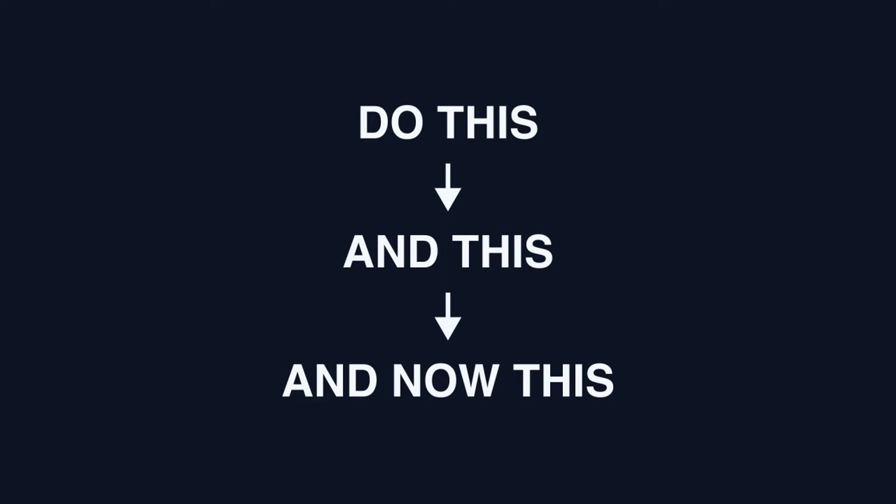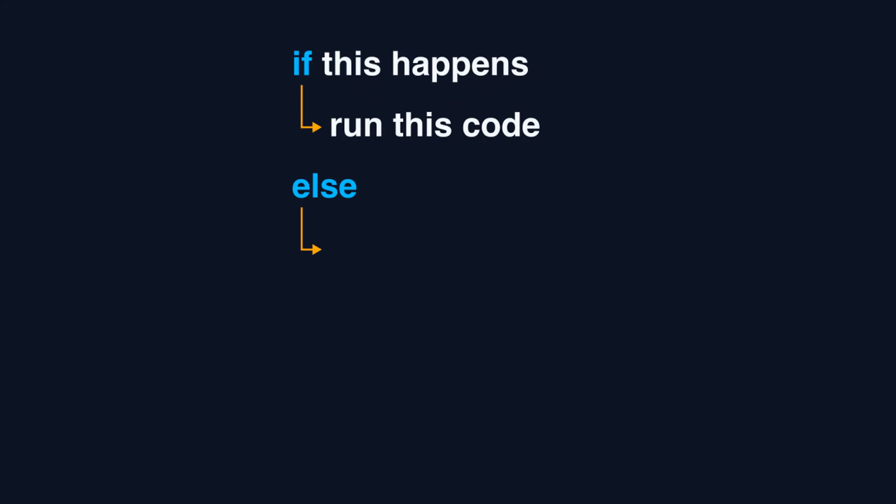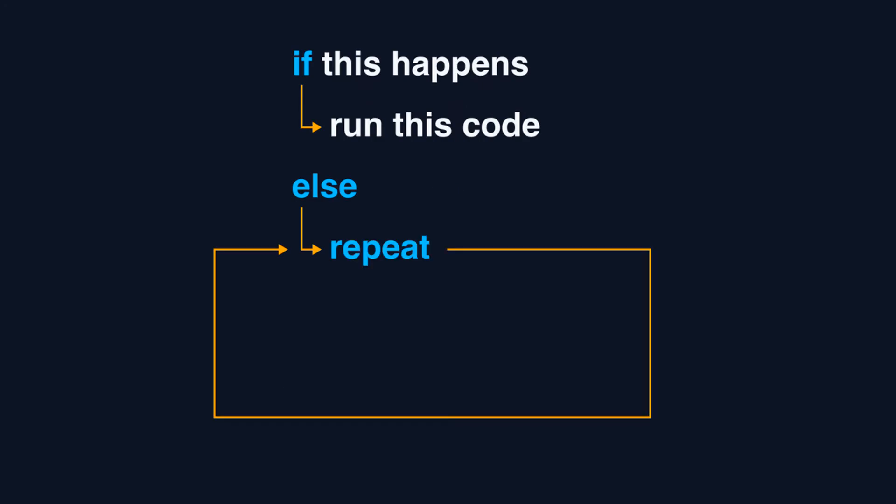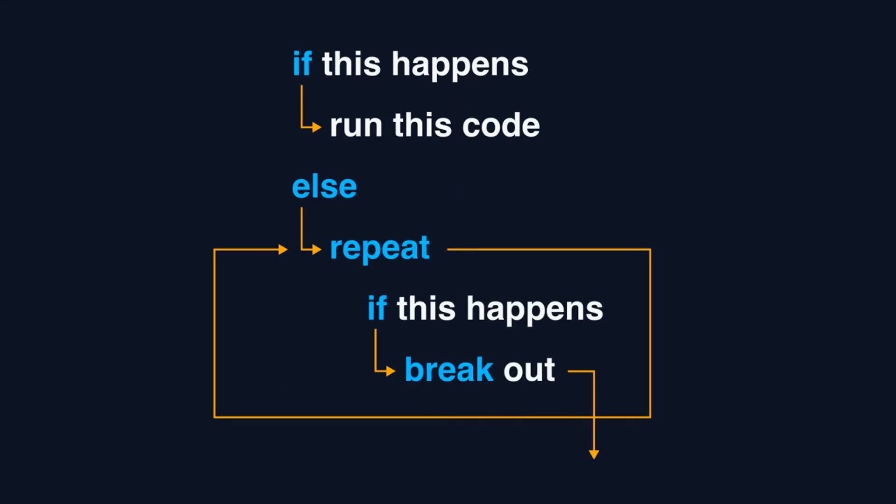If it was always like this, it would be impossible to create more complex programs. But with control flow statements we can define which code to run, if it should repeat, or if it should jump to a different line. There are three main types of control flow statements.